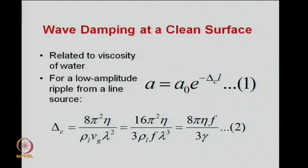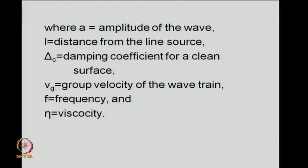We have made use of the relation between the group velocity and the frequency over here, there is a factor 3 by 2 which is involved in that relation. I already explained the notations here: a is the amplitude of wave at a distance l from the line source and delta c is the damping coefficient for clean system. V g is the group velocity of the wave train and f is the frequency, eta is the liquid viscosity, bulk viscosity.